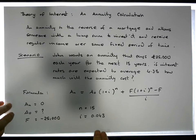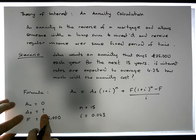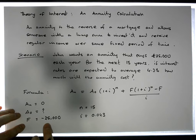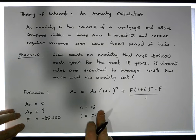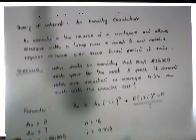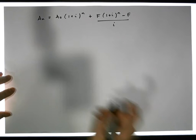Let's see what happens here. We're going to take An is zero, A0 we don't know, F is minus 25,000 euros, n is 15, and i is 4.3 percent.